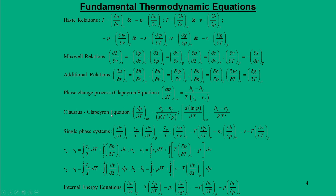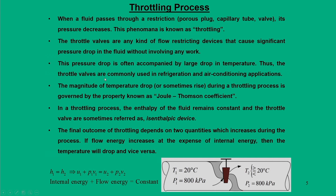Before I start, the fundamental thermodynamic equations we have learnt so far include 16 thermodynamic relations: basic relations, Maxwell relations, and we used them for phase change processes, single phase systems, and internal energy equations. Some of these equations will be useful for the definition of Joule-Thomson coefficients — these are the very vital relations we are going to use for practical applications.